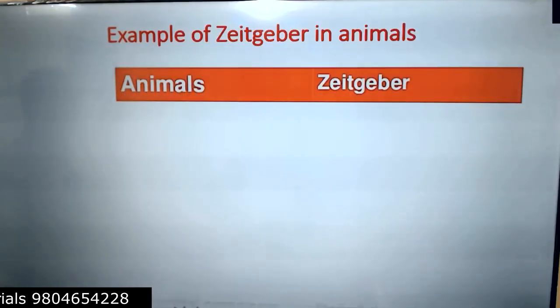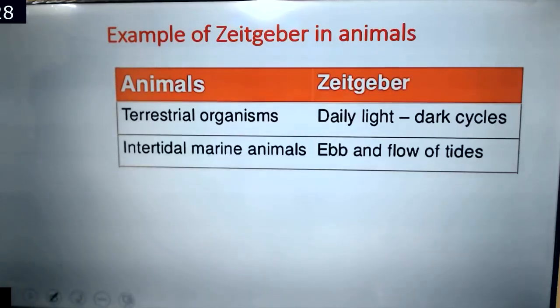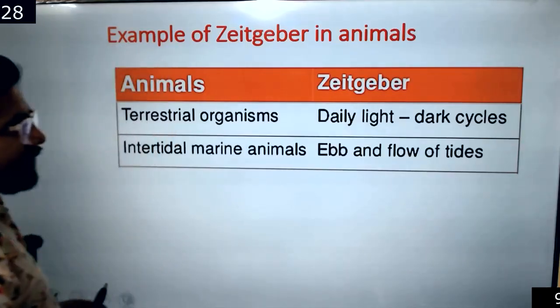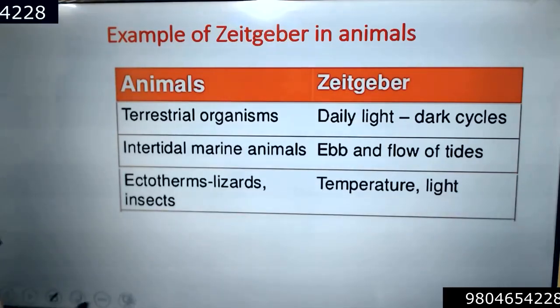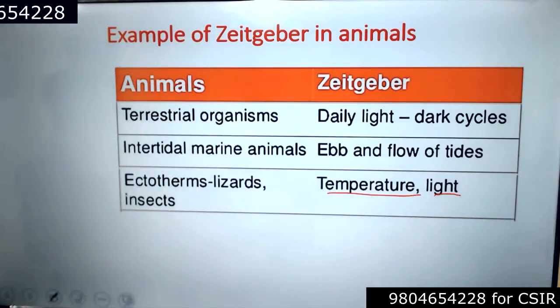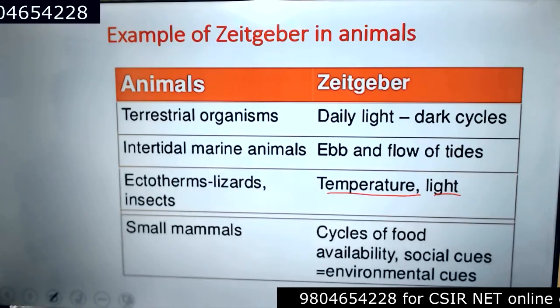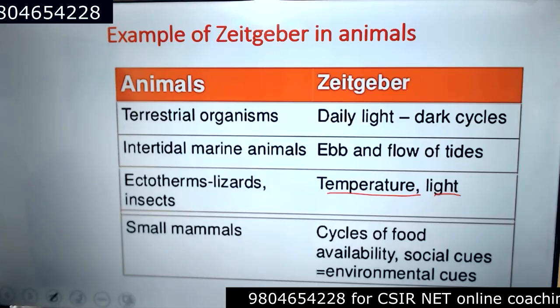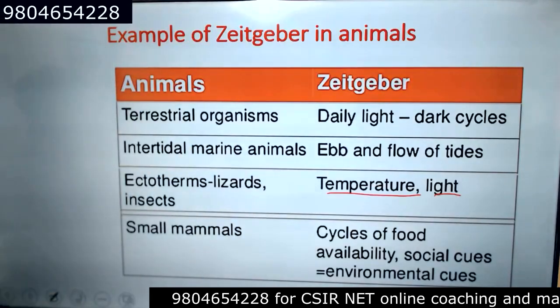Examples of Zeitgebers in animals: terrestrial organisms have light-dark cycles and the daily sleep-wake cycle as part of their Zeitgeber. Intertidal marine animals have the flow and blockage of tides as examples. Ectotherms like lizards and insects use temperature as a Zeitgeber — temperature is a key factor for preparing for hibernation. Small mammals use cycles of food availability and social cues as Zeitgebers synchronized to Earth's 24-hour or 12-month cycle.